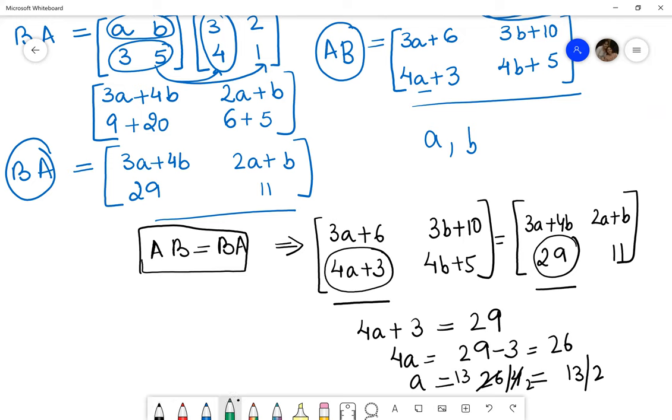Now calculating for B, we equate these values. So 4B plus 5 is equal to 11. 4B is equal to 6. B will be equal to 3 by 2.